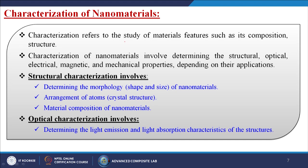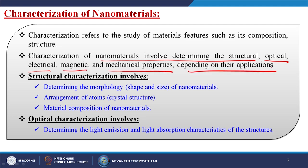Now we go into characterization of nanomaterials. Characterization refers to the study of materials' features such as composition and structure. It involves determining structural, optical, electrical, magnetic, and mechanical properties depending on applications. Structural characterization determines morphology (shape and size), crystal structure, and material composition. Optical characterization involves determining light emission and light absorption characteristics of the structures.